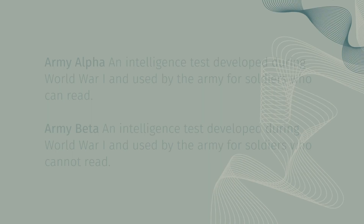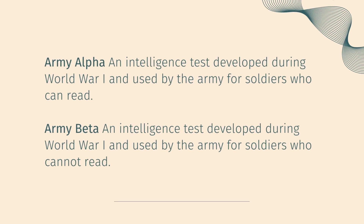I.O. psychology made its first big impact during World War I. Because of the large number of soldiers who had to be assigned to various units within the armed forces, I.O. psychologists were employed to test recruits and then place them in appropriate positions. The testing was accomplished mainly through the Army Alpha and Army Beta tests of mental ability. The Alpha test was used for recruits who could read, and the Beta test for recruits who could not read.